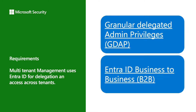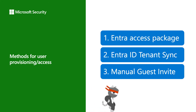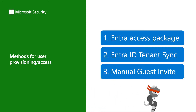You have basically two options. If you are a CSP partner of Microsoft, you can use a protocol named GDAP — it allows scalable management of your access into your customer tenants. The second way, if you are not a CSP partner, is using B2B: the Entra ID business-to-business connection. You can use access packages, manually invite external collaborators, or set up tenant-to-tenant sync to scalably manage those invites and permissions.